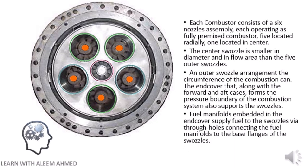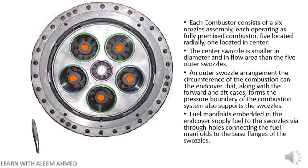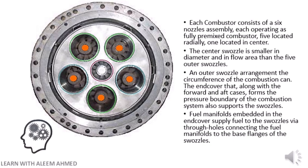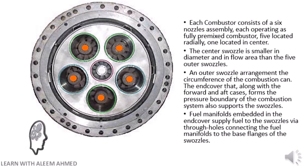In the DLN 2.6 Plus Combustion System, each combustor consists of a six-nozzle swazzle assembly, each operating as a fully premixed combustor — five located radially and one located in the center. The center swazzle is smaller in diameter and in flow area than the five outer swazzles. The end cover, along with the forward and aft cases, forms the pressure boundary of the combustion system and also supports the swazzles. Fuel manifolds embedded in the end cover supply fuel to the swazzles via through-holes connecting the fuel manifolds to the base flanges of the swazzles.